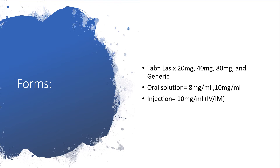Furosemide comes in various forms: tablets of 20 mg, 40 mg, and 80 mg, as well as generic preparations in those dosage forms. You can also find furosemide in oral solution form, for example 8 mg/mL or 10 mg/mL. You can also give furosemide intravenously or intramuscularly, which appears in the form of 10 mg/mL.